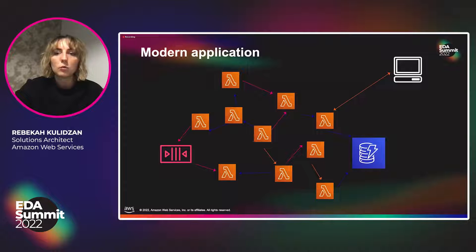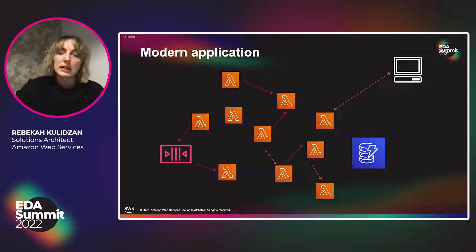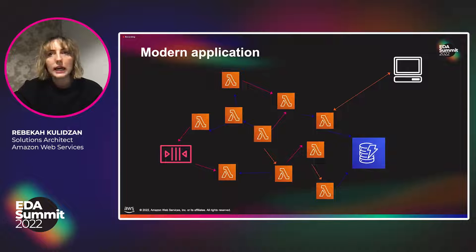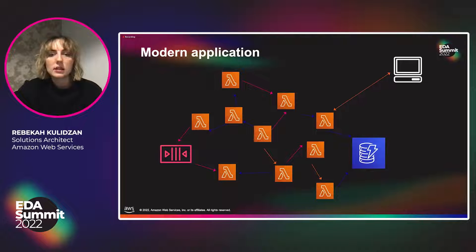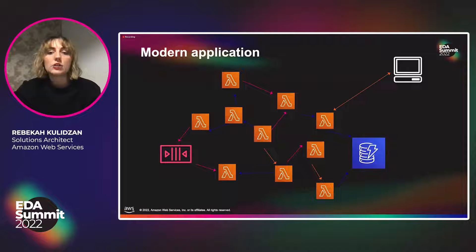Lambdas are stateless event-driven functions that exist in the cloud on AWS. But there aren't many apps with only one function, one entry point, one module, one component. There'll be loads of them talking to each other all over the place. Many applications also have some sort of data storage component — databases, like DynamoDB, though you could replace this with any. And on the cloud, a lot of them also have queues of one kind or another.